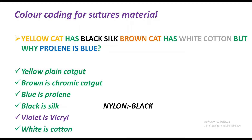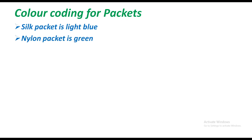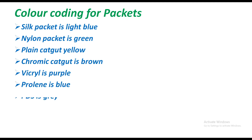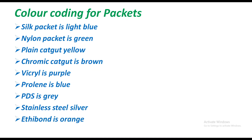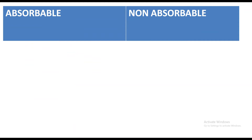You can remember that nylon is black in color. The packets also have color coding: silk packet is light blue, nylon packet is green, plain catgut is yellow, chromic catgut is brown, Vicryl is purple, Prolene is blue, PDS is gray, stainless steel is silver, and Ethibond is orange.